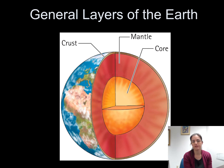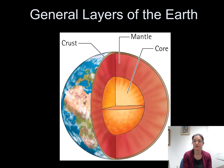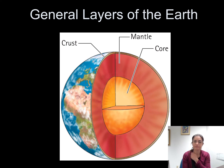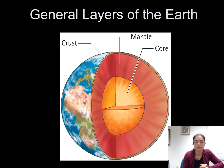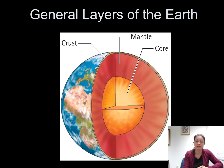The crust is thin relative to the thickness of the earth. The crust goes anywhere from extremely thin in some places to about 60 miles thick. A good analogy is an egg: the outside of the egg is the shell, the mantle represents the white of the egg, and the core represents the yolk of the egg.